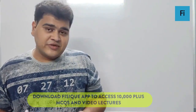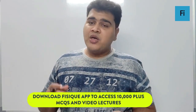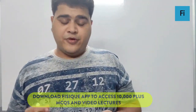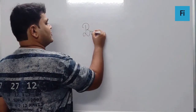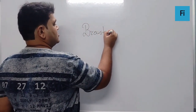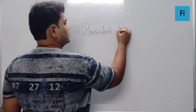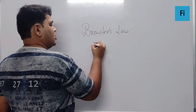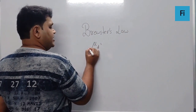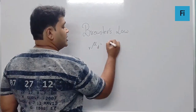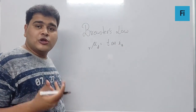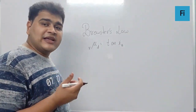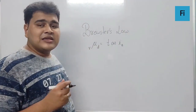The next question is a very interesting one. It says, the Brewster's angle IB for an interference should be — now we know as per Brewster's law, mu of the denser medium with respect to the rare medium is tan of IB, where generally we also write IP as the polarizing angle. Here we have referred to it as IB.